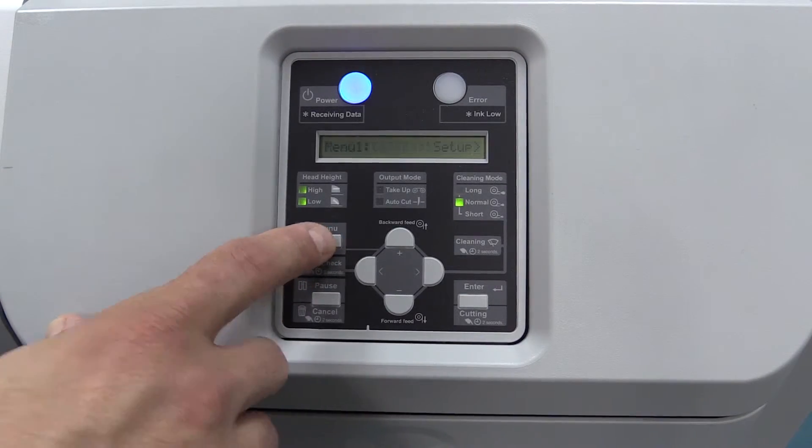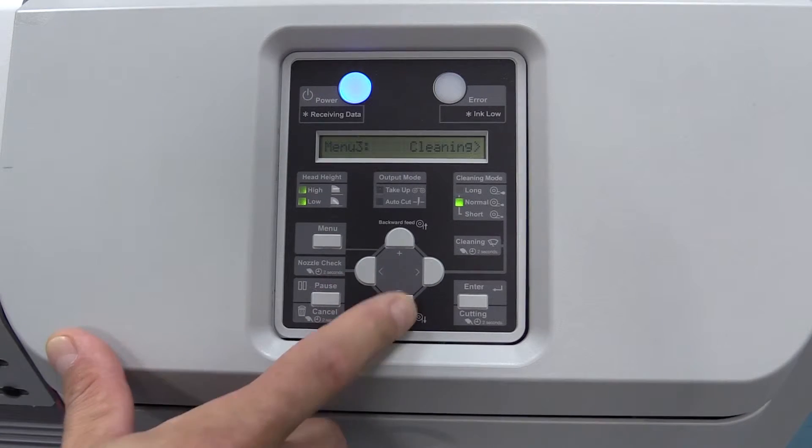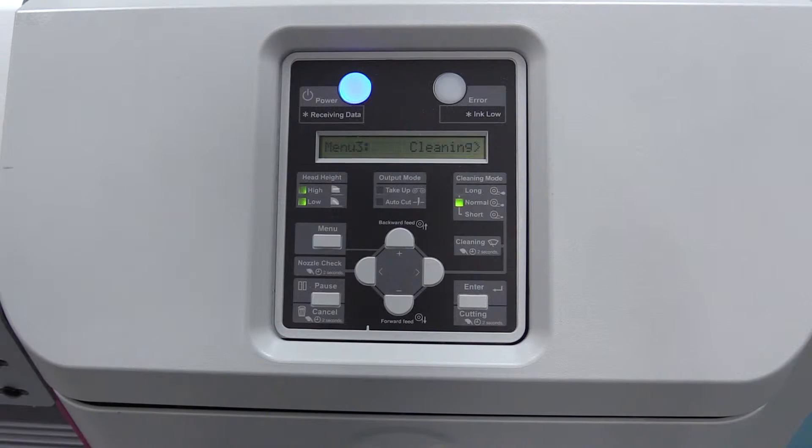To enter the cleaning menu, press Menu and cycle down to Menu 3, Cleaning. To enter the sub-menu, press the right button and it's going to give you five options.